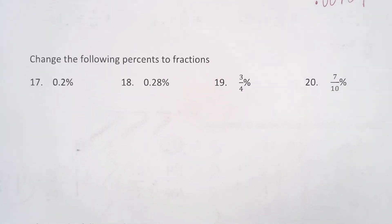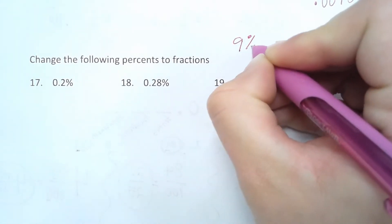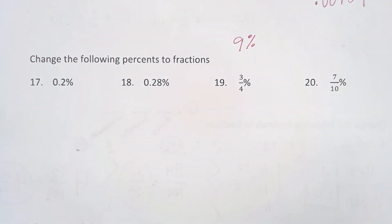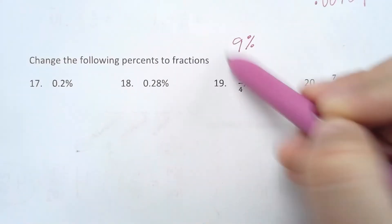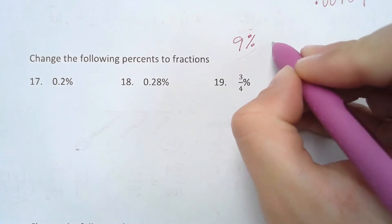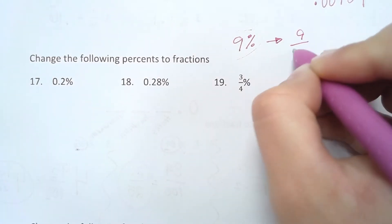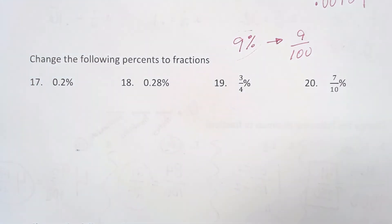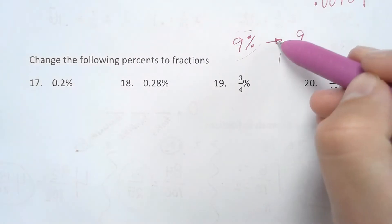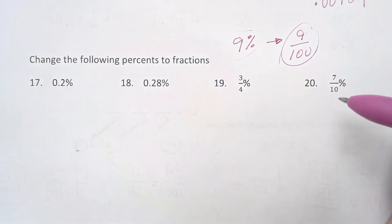Moving on — change the following percents to fractions. These are a little more difficult to work with. But if I were to give you a whole number like 9%, we know that percents are always out of 100. So to change it into a fraction, I'm just going to put that number out of 100 — 9% is the same thing as 9 out of 100. Then see if you can simplify. In this case, I can't, so I would just leave it as 9 out of 100.